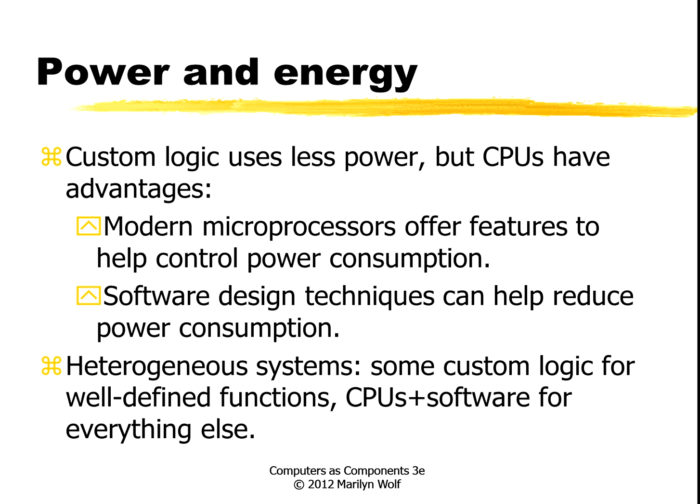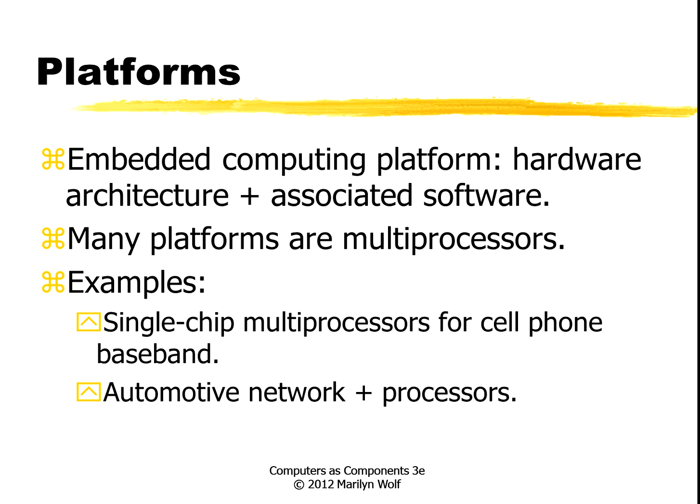It's important to keep in mind that a lot of embedded systems are really what we call heterogeneous systems — that is, they have CPUs and software, but they also have some custom logic for particular functions. We use the term platform to talk about the hardware: the processor, the IO devices, the memory, and some of the associated software like drivers and power management software. A lot of platforms can also have more than one processor in them. Cell phones and cars are both examples of computing platforms that have multiple processors.